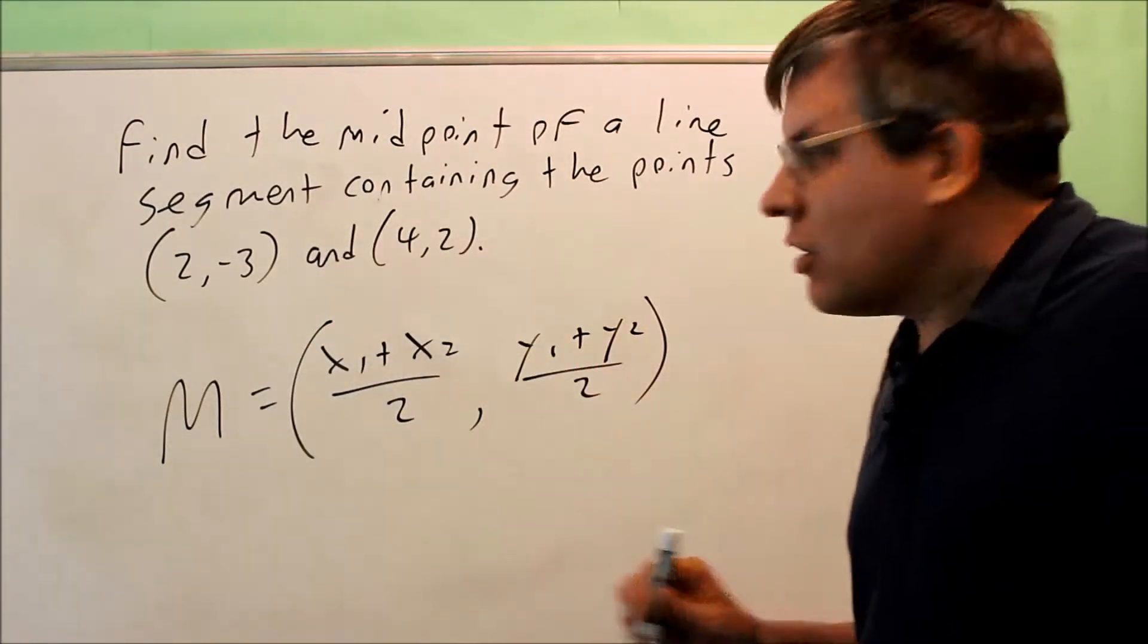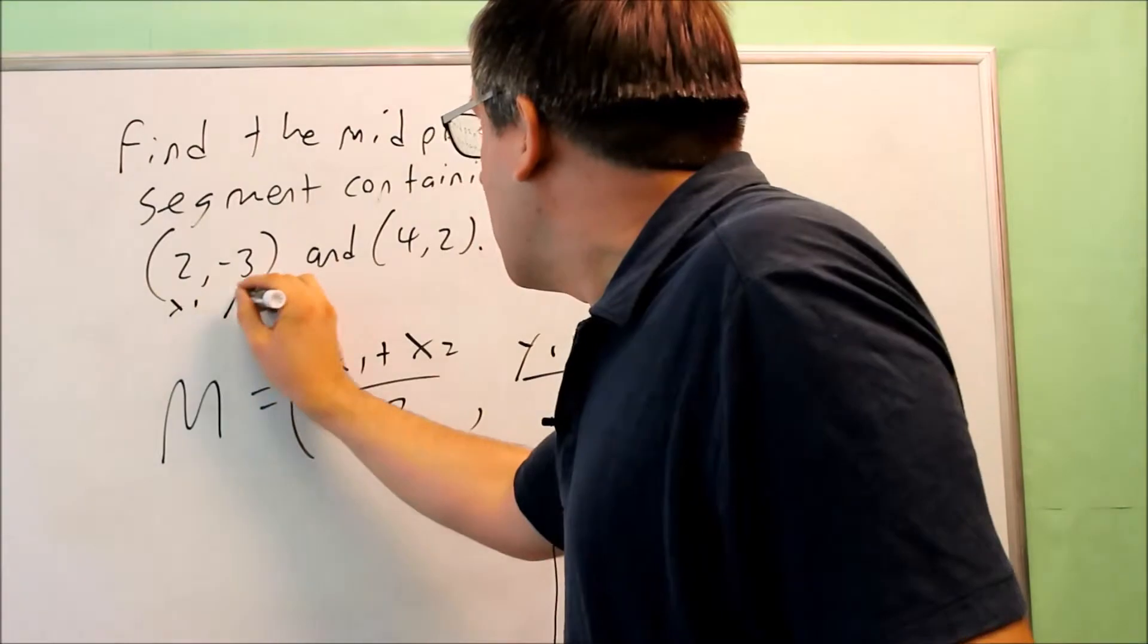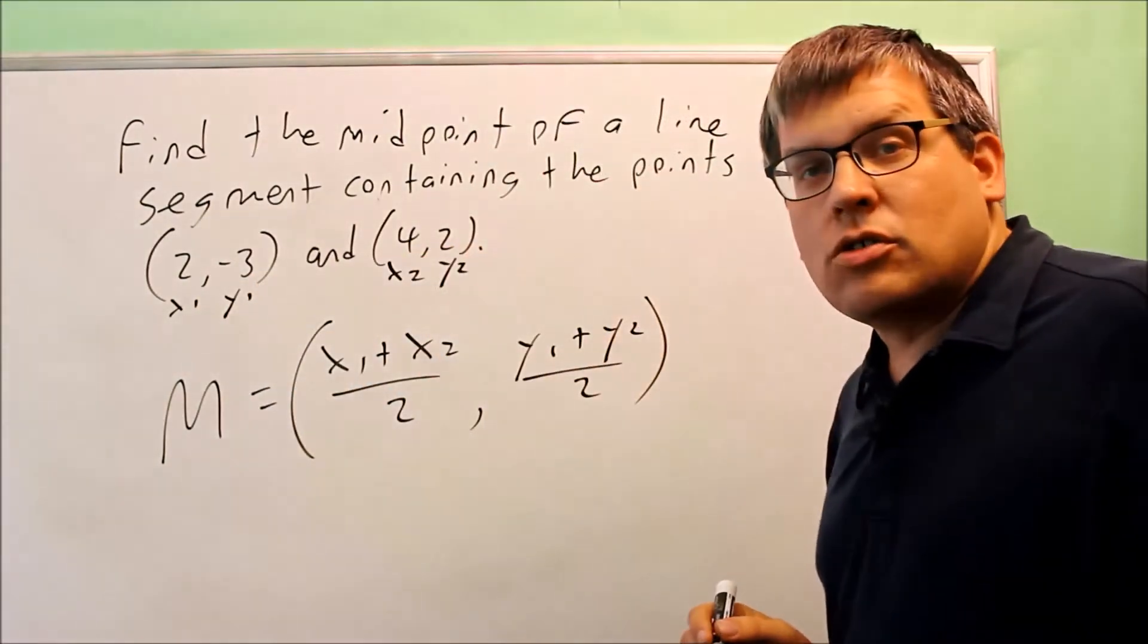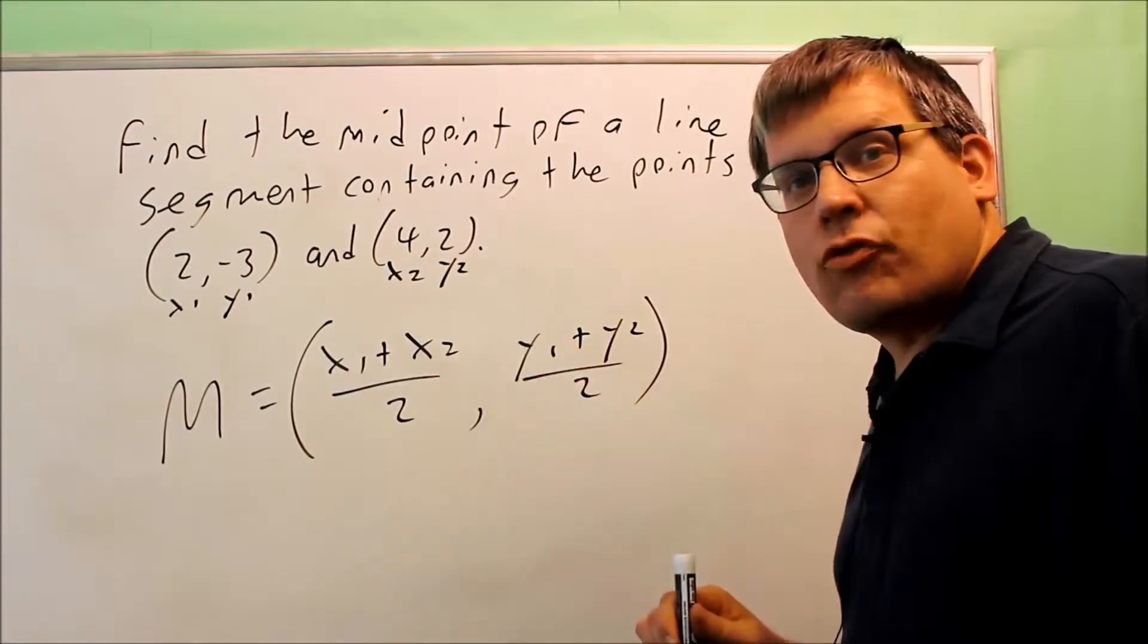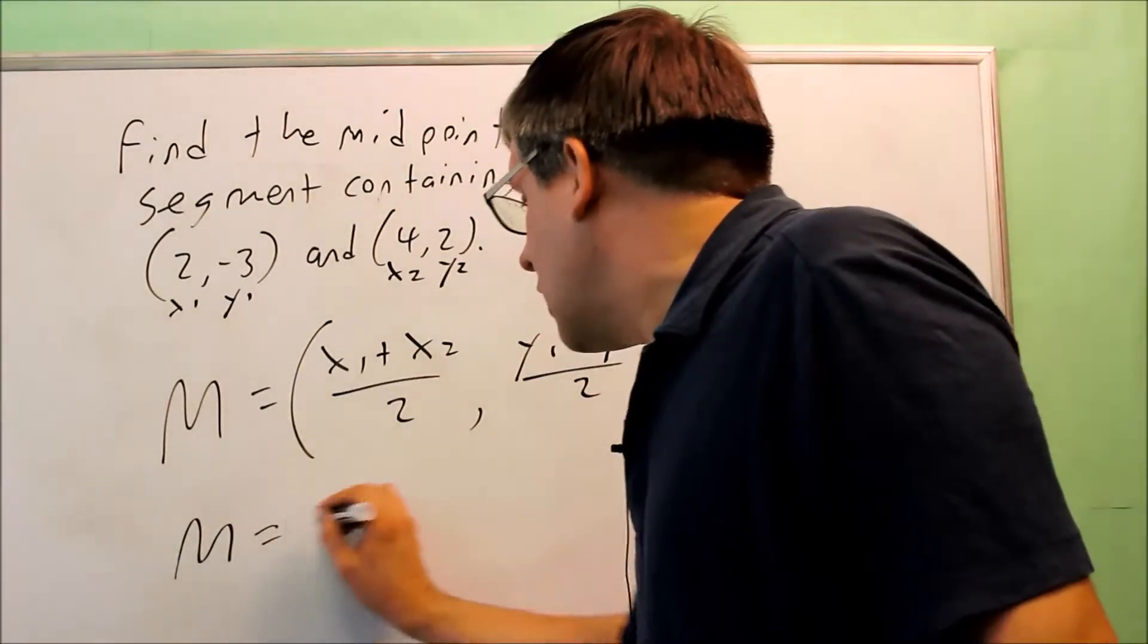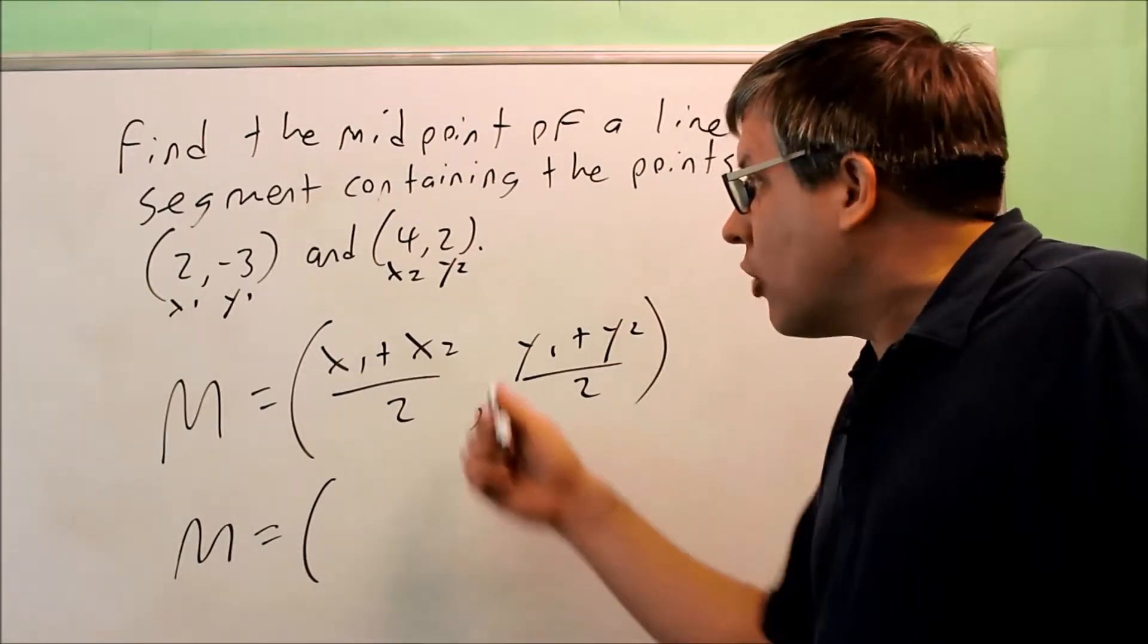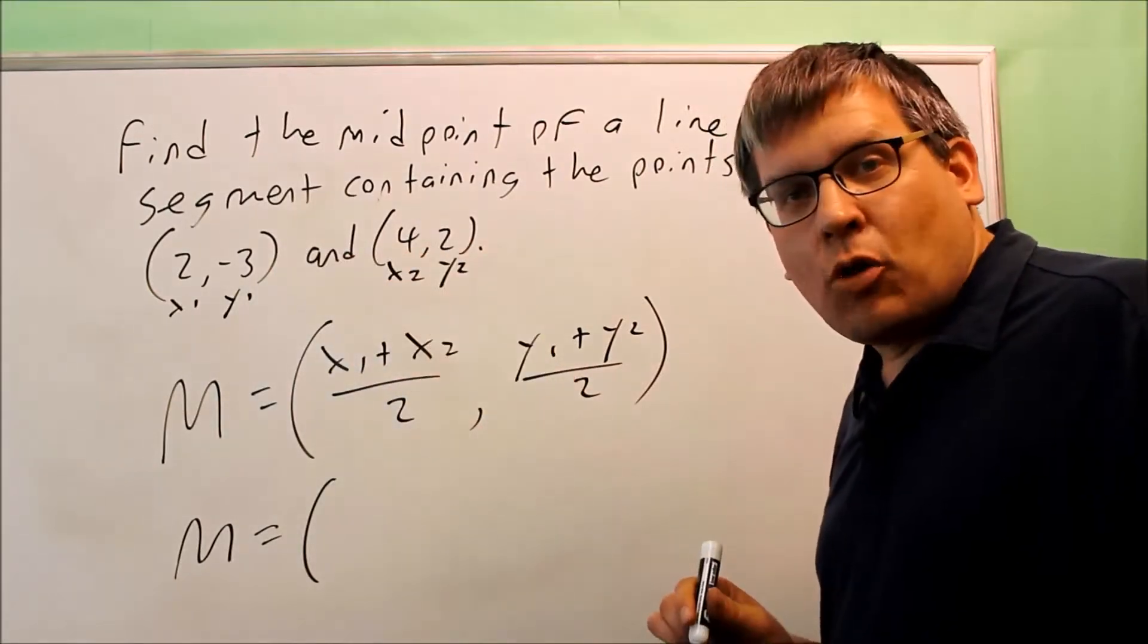With these two points, I can label them any way that I want. I'm going to label this one x1, y1, and I'm going to label this one x2, y2. We're just going to put the numbers into the formula, simplify it, and that's going to be our answer. Our answer will be a coordinate, it's a point that would be halfway between both of these.